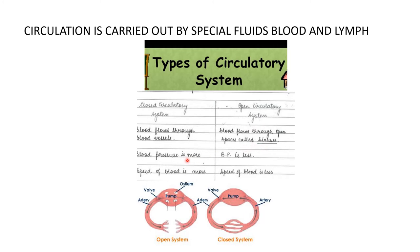In closed circulation, blood pressure and speed of blood are higher, and hemoglobin-like pigments are present for gaseous exchange. In open circulation, blood pressure and speed are lower, and no such pigments are needed as there is no gaseous exchange. Closed circulation is of two further types: single circulation, in which blood passes through the heart only once per cycle, and double circulation, in which blood passes through the heart two times.